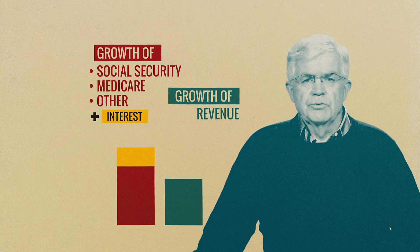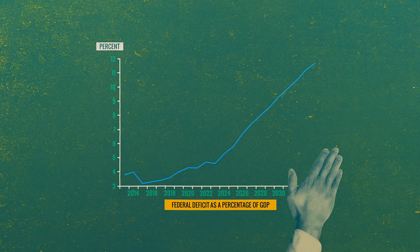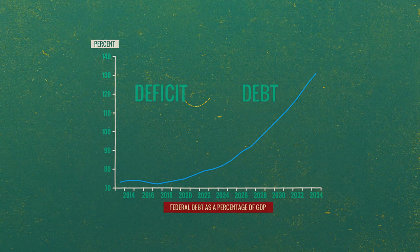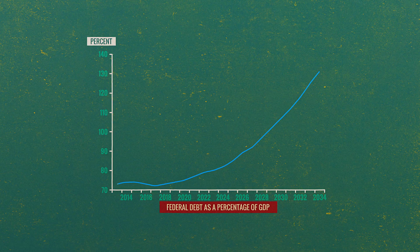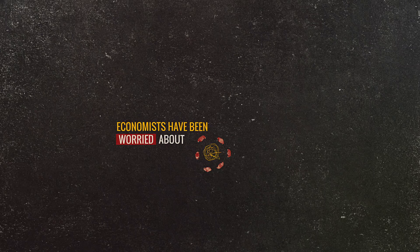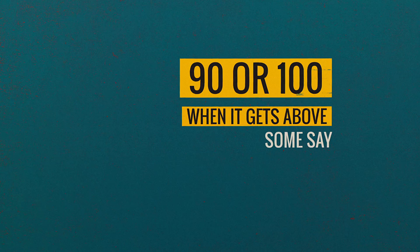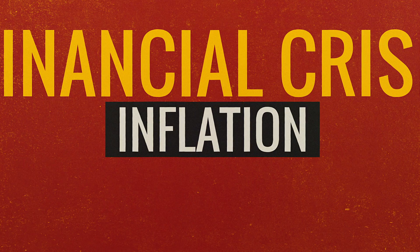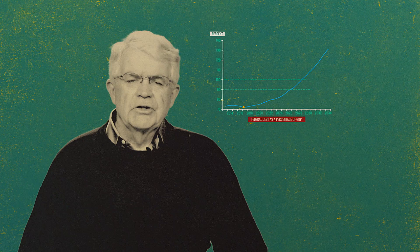If you take that deficit and find out what the increase in the debt will be, using the relationship between deficits and debt, and divide the debt by GDP, the federal debt as a percentage of GDP is rising pretty rapidly — from around 70–75 percent of GDP up to about 130 percent. Economists have been worried about debt rising too rapidly as a share of GDP; some say that above 90 or 100 percent there are significant risks such as financial crisis or inflation.